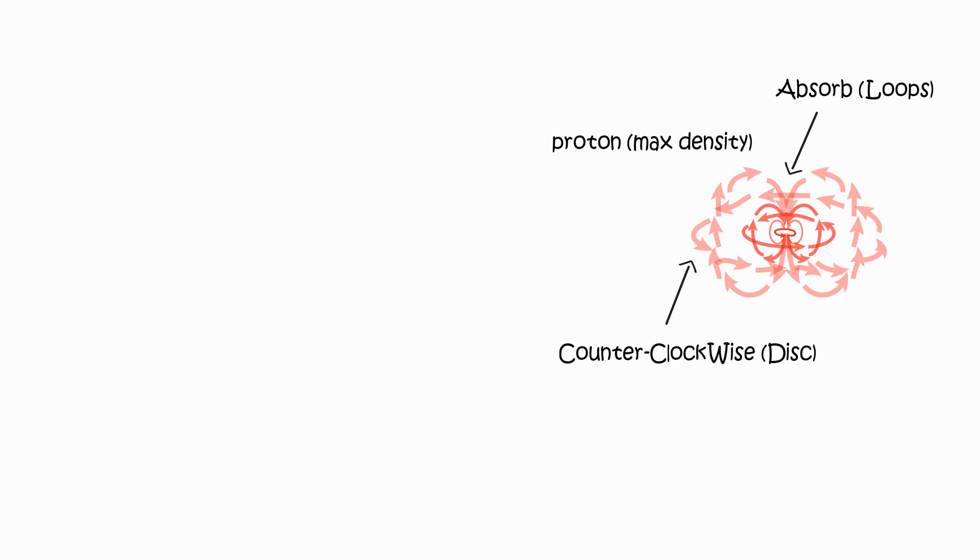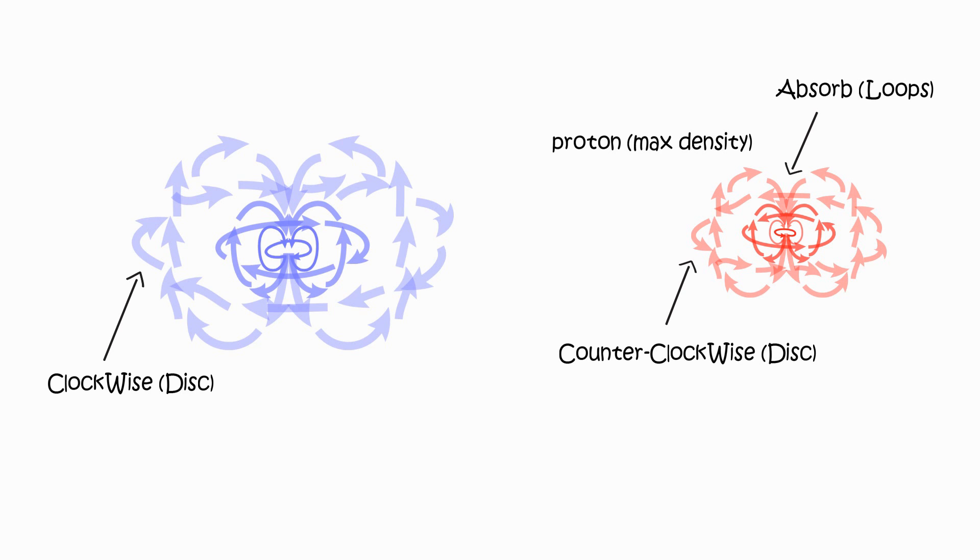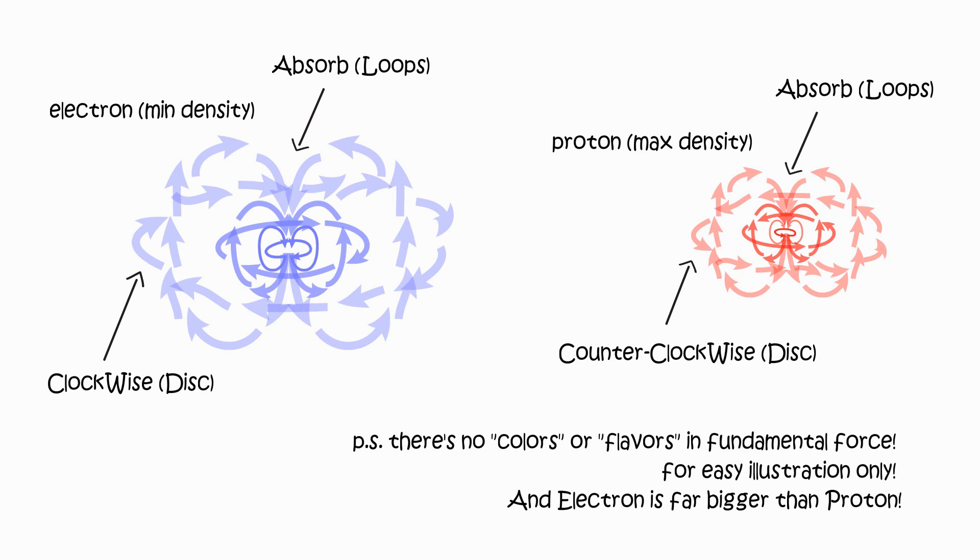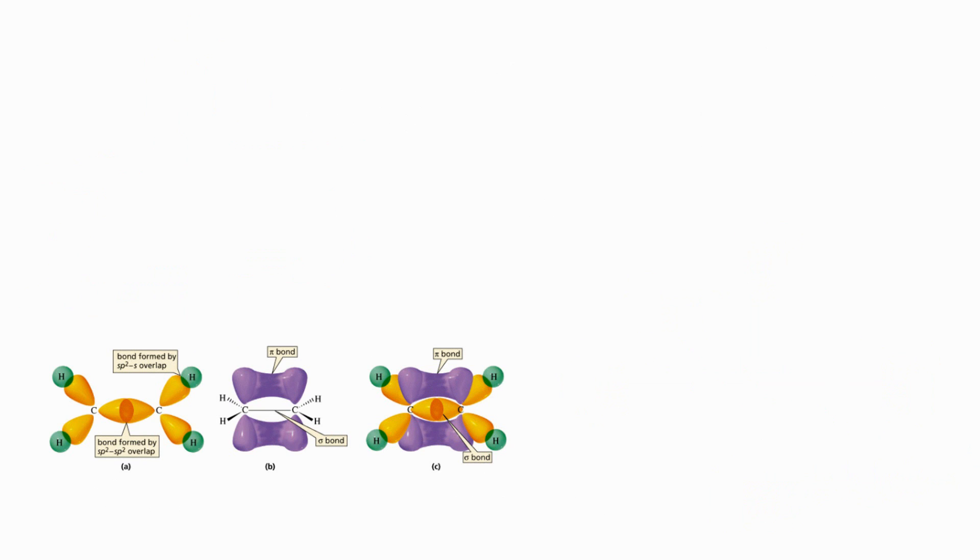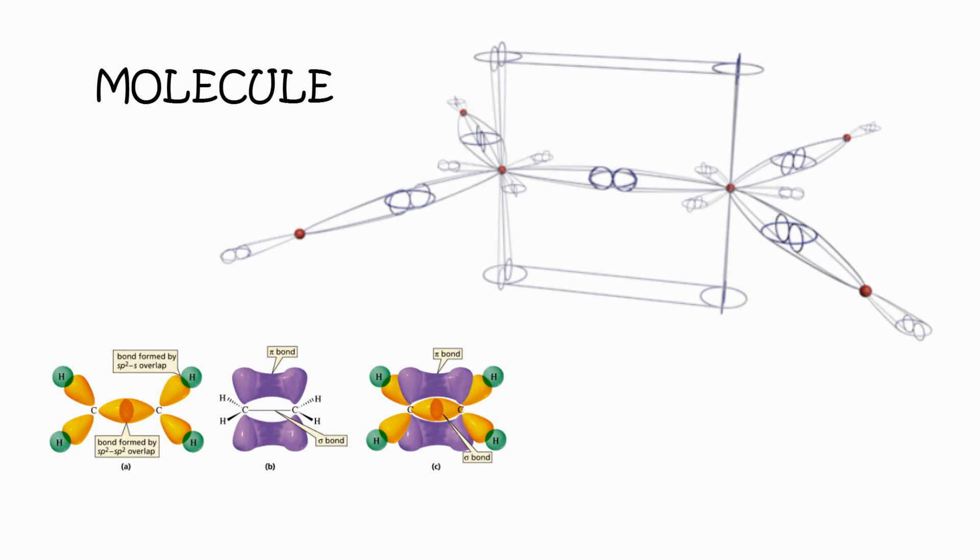Proton or positron's trajectory is counterclockwise absorbed. Electron or anti-proton's trajectory is clockwise absorbed. Atom is integrated field system, primarily to balance trajectories. Molecules is integrated field system to balance trajectories and shells.